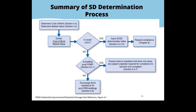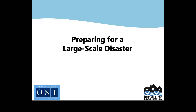There's a flow chart in the Substantial Improvements/Substantial Damage Desk Reference that walks you through the process of determining cost, comparing it to the 50% threshold, and which direction to go. It's a good reference to have on hand. With that, I'll turn it over to Samara, who will talk more about preparing for large-scale events and how to deal with them.